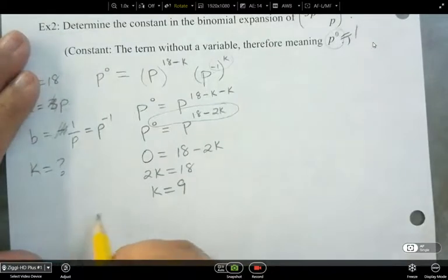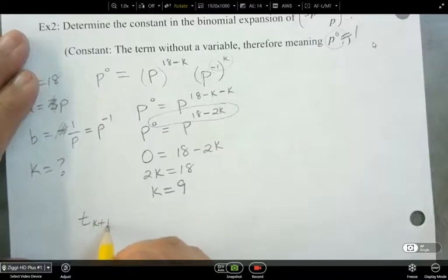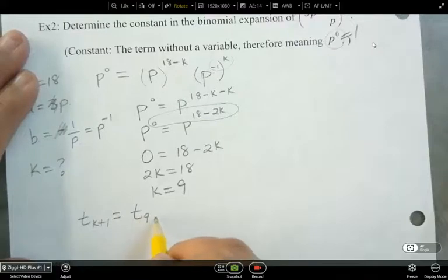Okay, now what are we actually wanting? Which term do we want? k plus 1. So k is 9, so we want the 10th term.